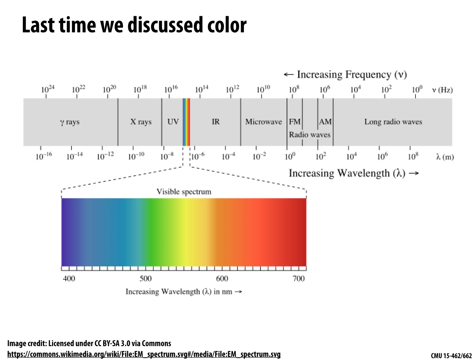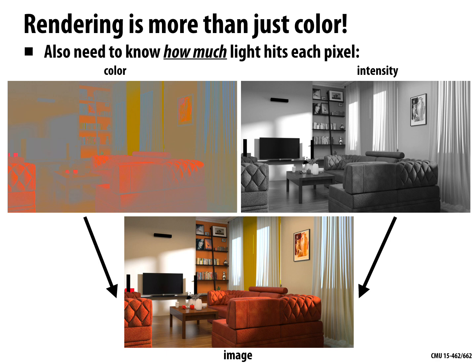Last time we had a long discussion about color, and one of the most important ideas is that the color of light has to do with its wavelength — the rate at which an electromagnetic field is oscillating. We have this very narrow band of wavelengths that human eyes can see, which we call the visible spectrum. But rendering is more than just color. We also need to understand how much light is hitting every point in the scene, or how much light from the scene is hitting our camera. These two components — what color of light and how intense or bright it is at every point — together make our final image.